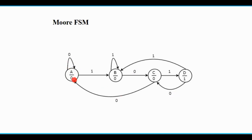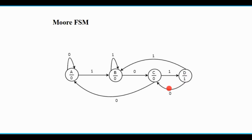During state A, if the input is 0 there is no transition and it remains in that state; if the input is 1 there is a transition from A to B. During state B, if the input is 1 it remains in that state; if the input is 0 there is a transition from B to C. During state C, if the input is 1 there is a transition from C to D; if the input is 0 there is a transition from C to A. During state D, if the input is 0 there is a transition from D to C; if the input is 1 there is a transition from D to B.